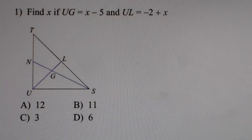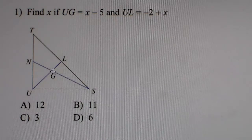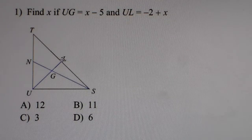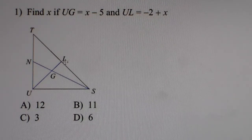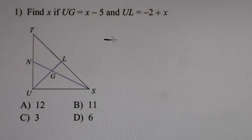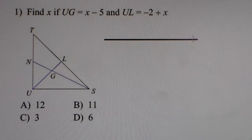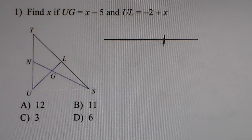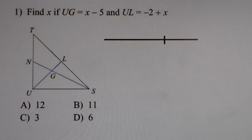So, with number 1, we have: find x if UG, from here to here, is x minus 5, and UL, the entire thing, is negative 2 plus x. What we did in class, we took this line and made it more of a number line. From here to here was 2-thirds of the line, and from here to there was 1-third of the line.